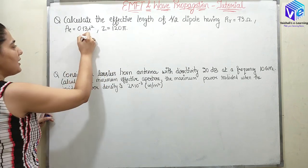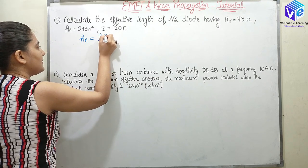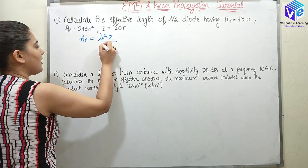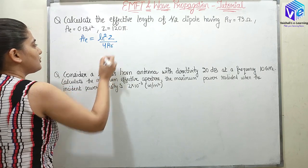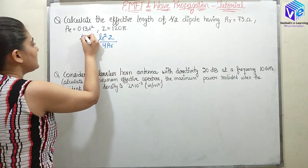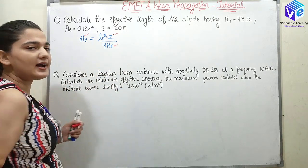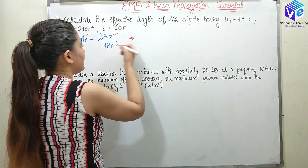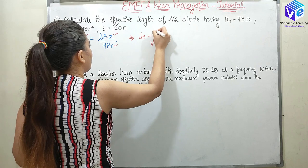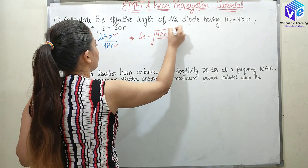We need a relationship between all the given quantities. The formula for effective aperture area is: Ae = le² × Z / (4 × Rr). We know Ae, we know Z, we know Rr, and 4 is a constant. So we can find le. Rearranging this formula: le = √(4 × Rr × Ae / Z).